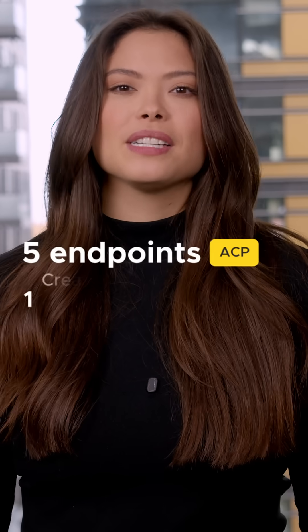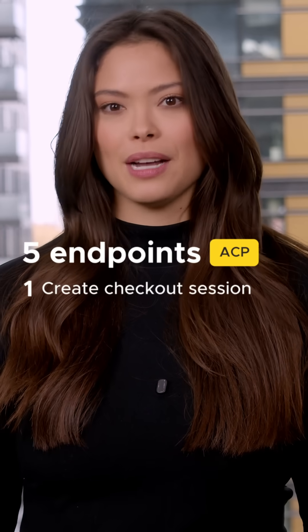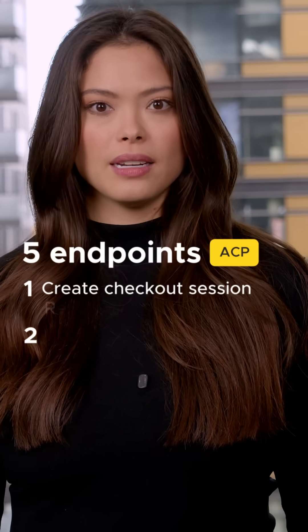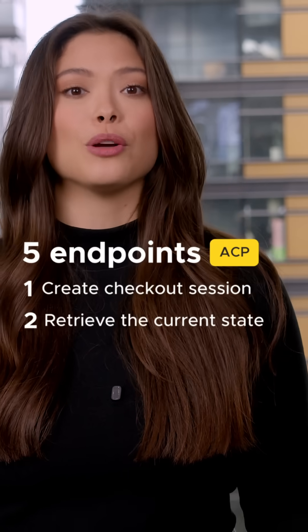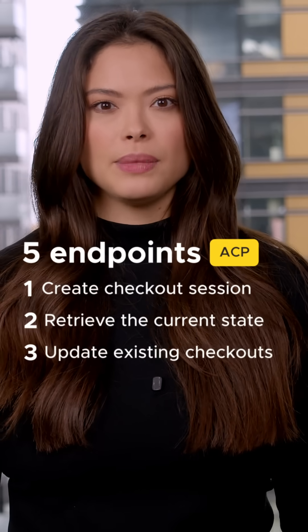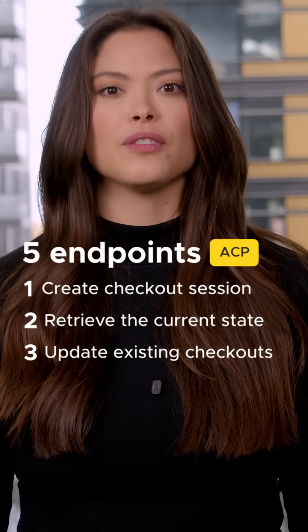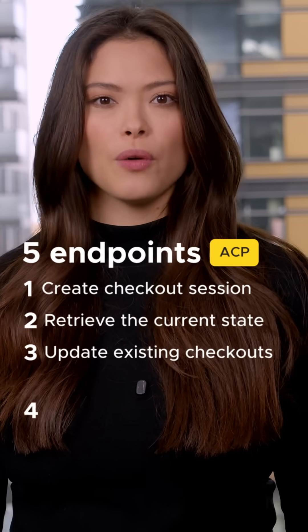At the core of ACP are five key endpoints. First, agents can create a checkout session by sending items, buyer details, and shipping information to the seller. Second, they can retrieve the current state of checkout to confirm pricing or availability. Third, agents can update existing checkouts — for example, changing quantities, fulfillment options, or delivery addresses.